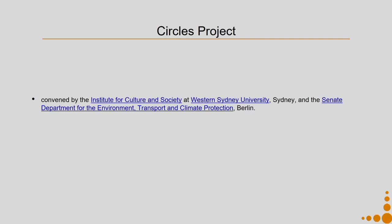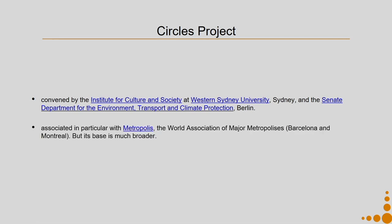Rather than three dimensions, in Circles of Sustainability we talk about four dimensions: ecology, economics, political, and cultural. The method originates from the Circles Project, which was convened by the Institute for Culture and Society at Western Sydney University and the Synod Department for the Environment, Transport and Climate Protection in Berlin. There are many associated partners, in particular Metropolis — the world association for major metropolises — but its base has now broadened to a great extent.